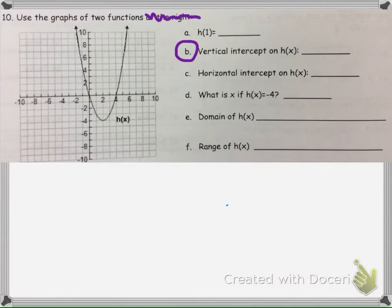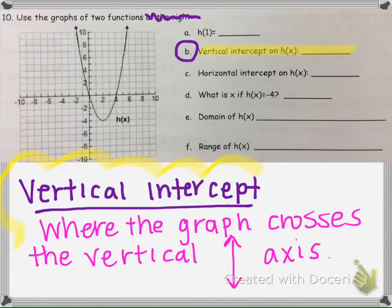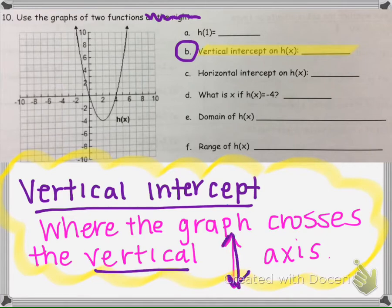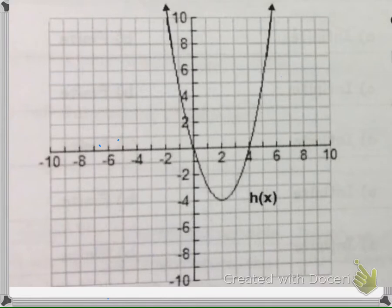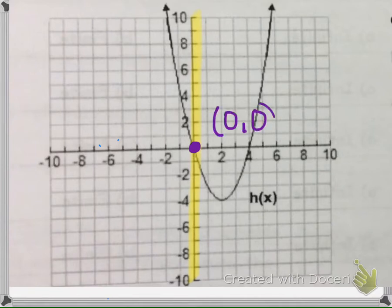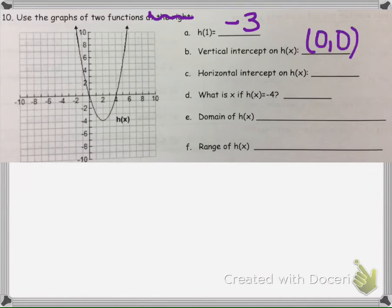The next question asks us to find the vertical intercept of h(x). It's asking where the graph crosses the vertical axis. We use 'vertical intercept' as a general term instead of 'y-intercept.' Looking at this graph, the vertical number line is here, and the graph crosses it at the origin. So our answer is (0, 0).